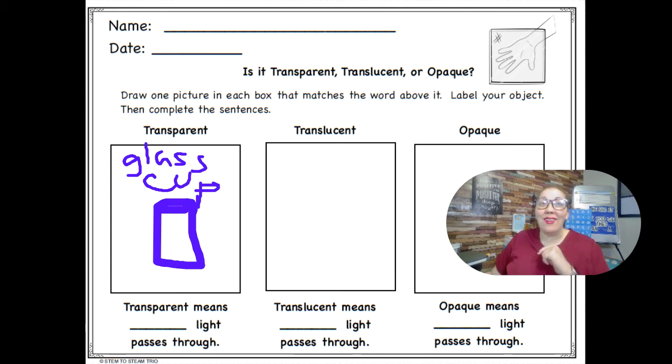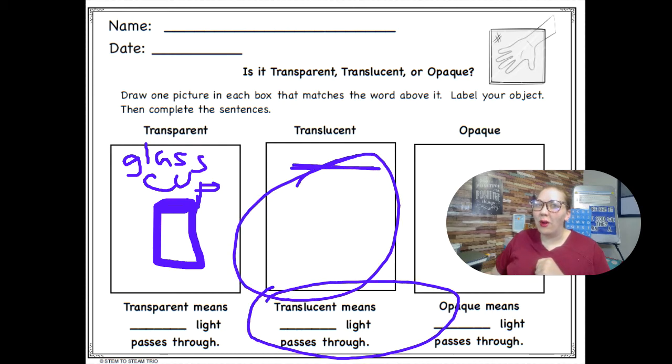So we're going to fill in the blank, then go to translucent, draw a picture, fill in the sentence, make sure you label what it is, and same thing for opaque.